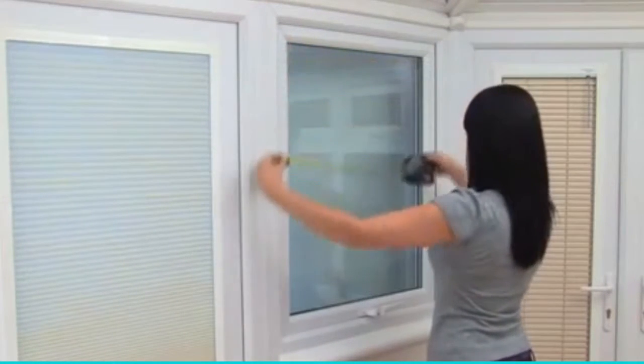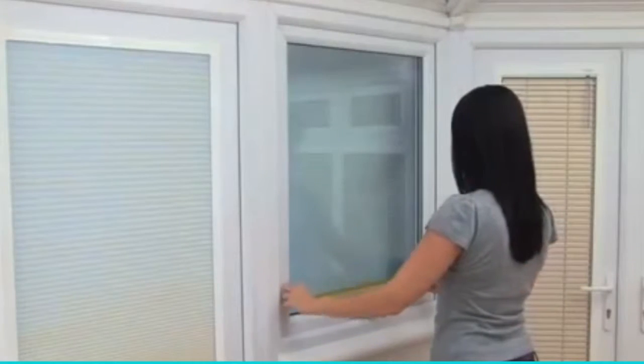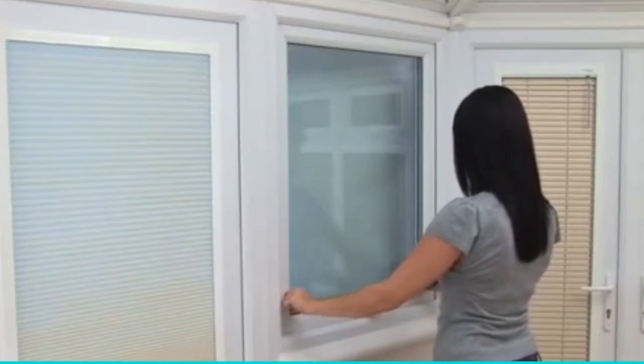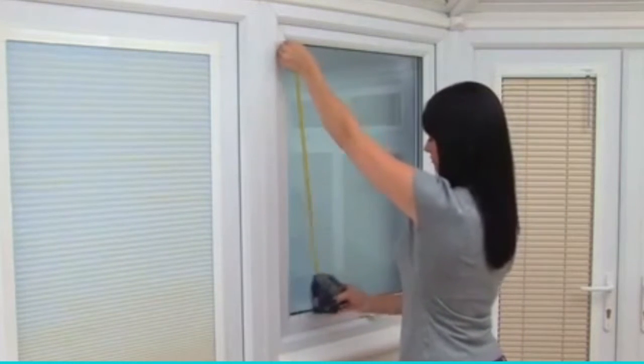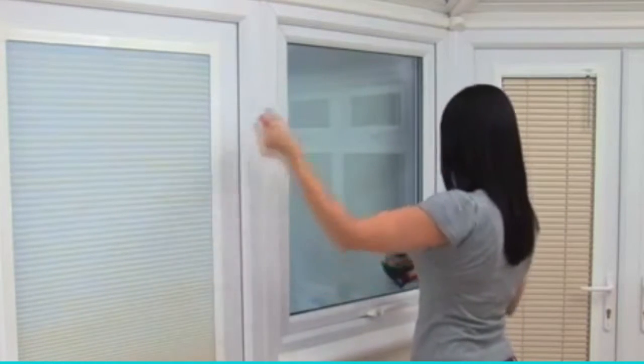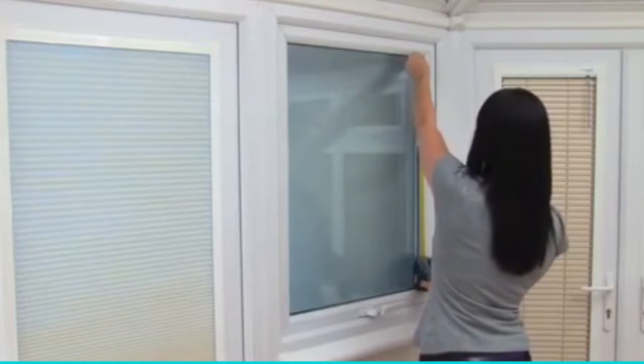We recommend that you measure both corners of your window and use the smallest size taken. Repeat this process for the drop of the window and again record the smallest size taken.